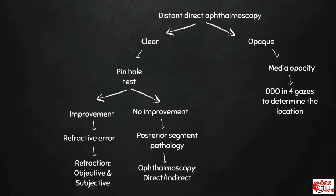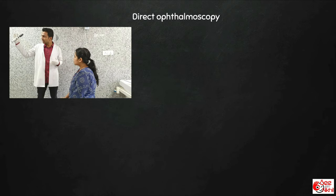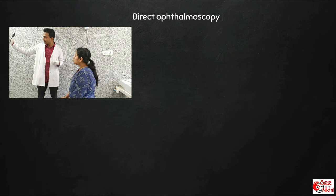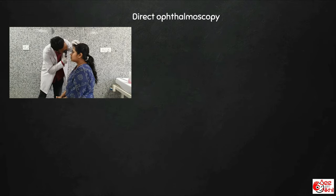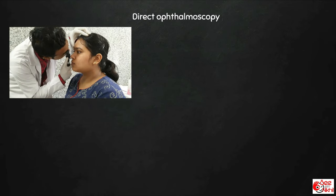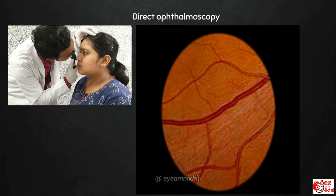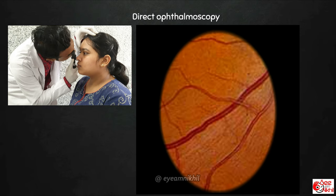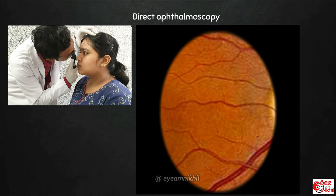In a patient with good glow on distant direct ophthalmoscopy but no improvement with pinhole, ophthalmoscopy needs to be performed. In direct ophthalmoscopy, the examiner stands on the side of the eye to be examined and the patient is asked to look straight ahead. When examining the right eye, the examiner holds the ophthalmoscope in his right hand and examines with his right eye, moving as close to the patient's eye as possible — theoretically at the anterior focal plane, around 1.5 cm from the cornea. For the left eye, scope in left hand, examined with the left eye. The field of view is around 5 degrees. Once the retina is focused, blood vessels are traced back to the disc, and details of the disc, macula, and blood vessels are noted.